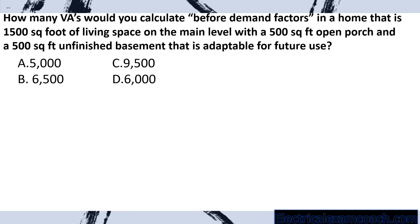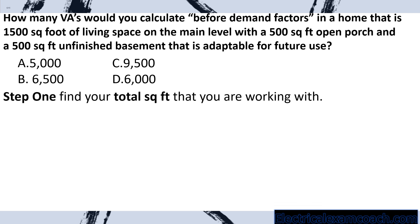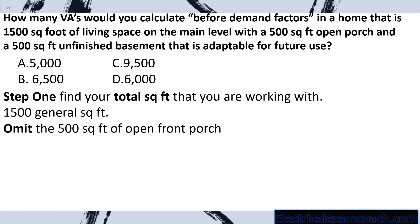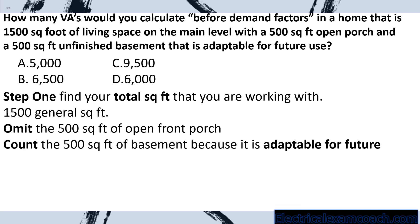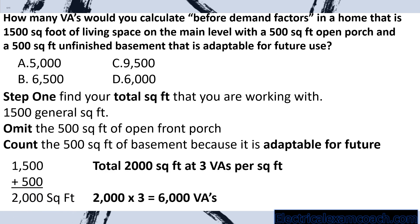Practice problem: how many VAs would you calculate before demand factors in a home with 1,500 square feet of living space on the main level, a 500 square foot open porch, and a 500 square foot unfinished basement adaptable for future use? Step one: total the square footage. We count the 1,500 general area, omit the 500 square foot open porch, and count the 500 square foot basement — giving us 2,000 square feet. Multiply by three VAs per square foot, and we get 6,000 VAs.